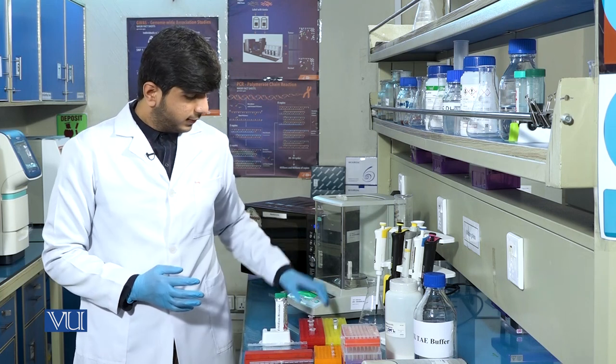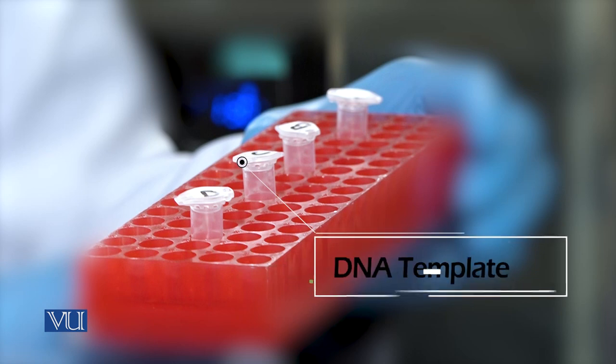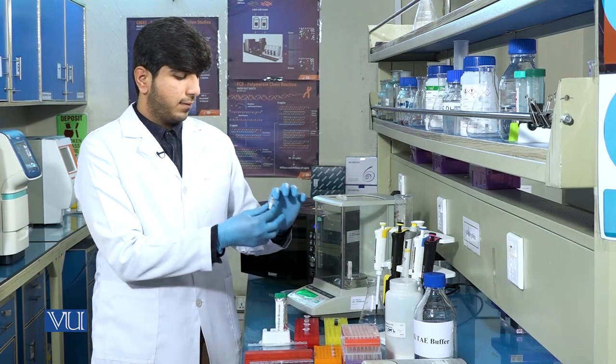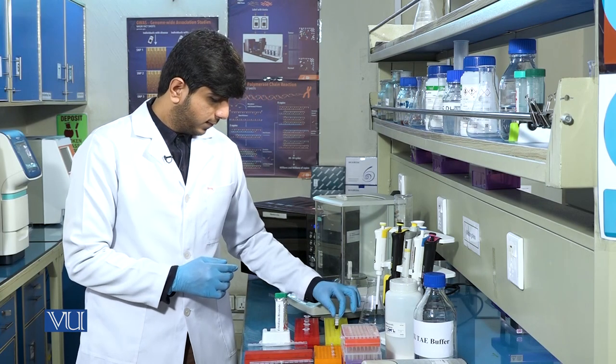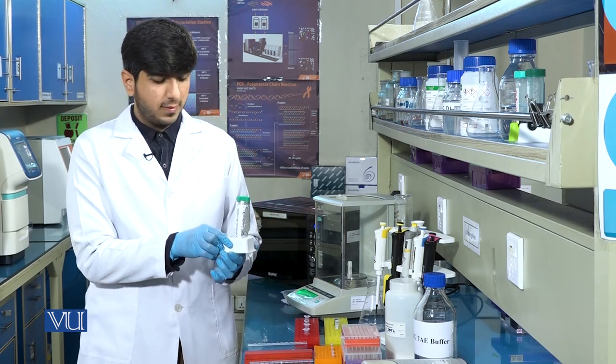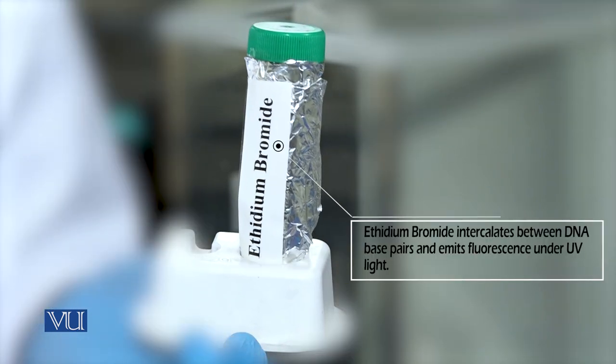For the agarose gel electrophoresis, we need DNA template, 6x loading dye which is Bromophenol blue, and ethidium bromide, which is a fluorescent dye used to visualize the DNA under UV light.